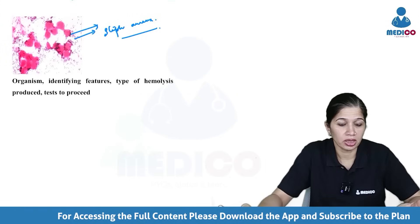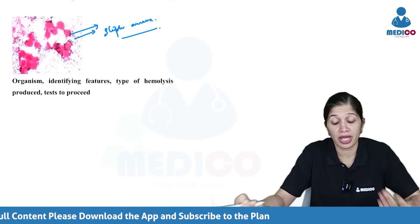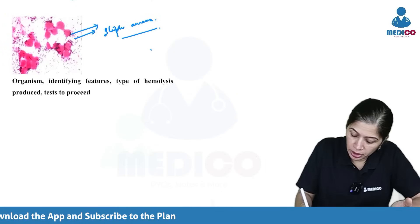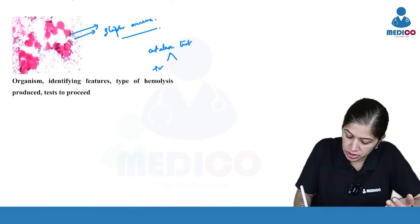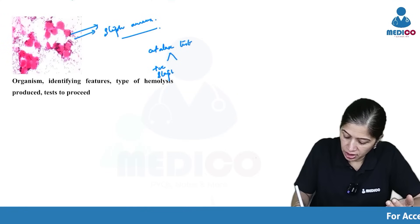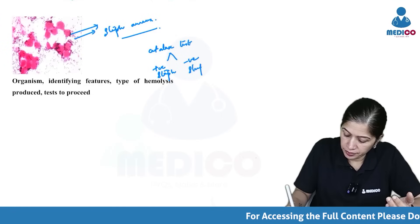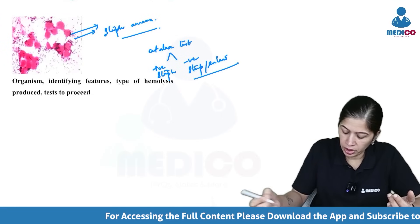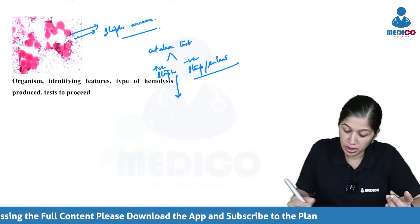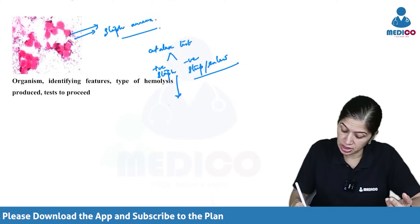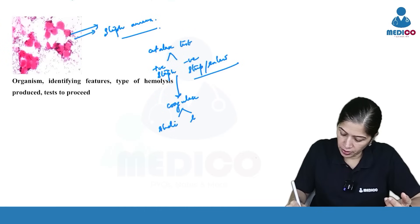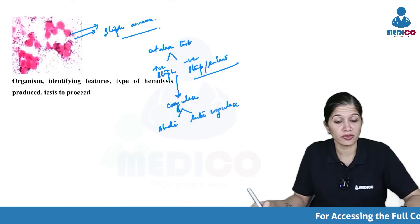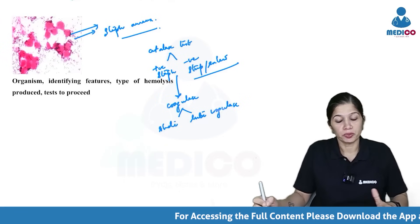Once a growth is obtained and gram staining is done, the next step is the catalase test. Catalase positive is staph, and catalase negative is strep or entero. Once the smear shows gram-positive cocci in clusters, the next step is the coagulase test. There is a slide and a tube coagulase test — both will be positive for Staph aureus.